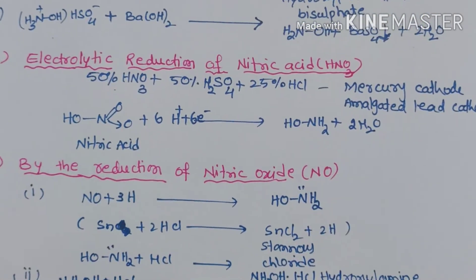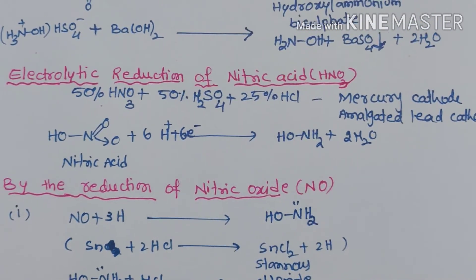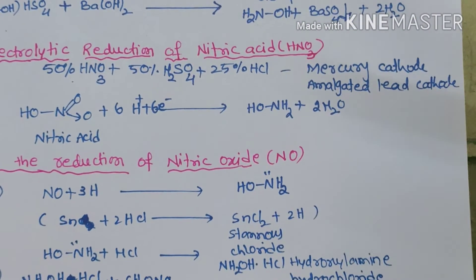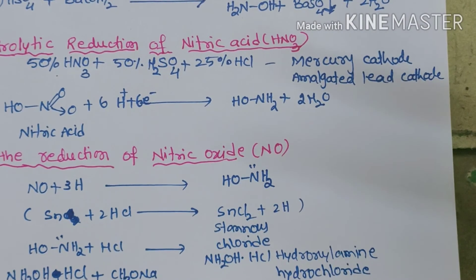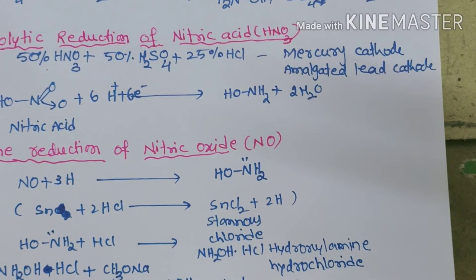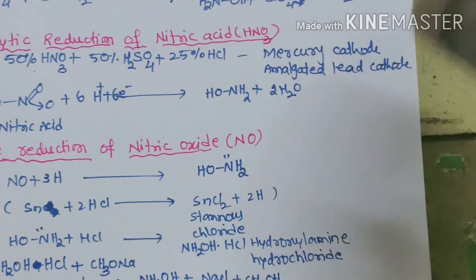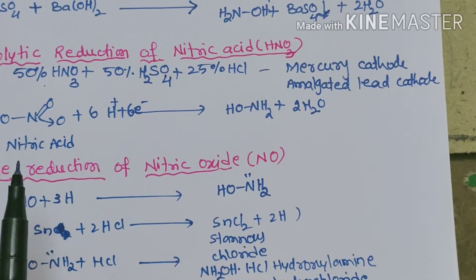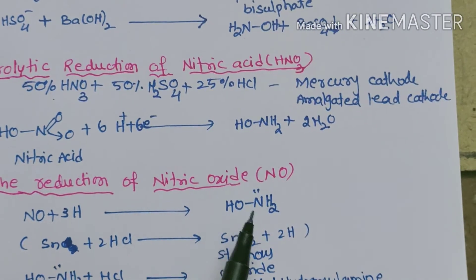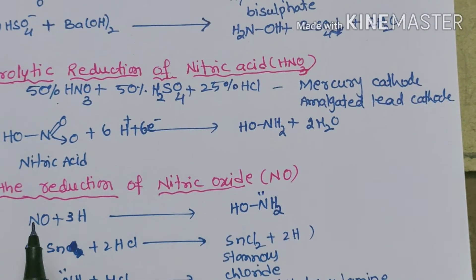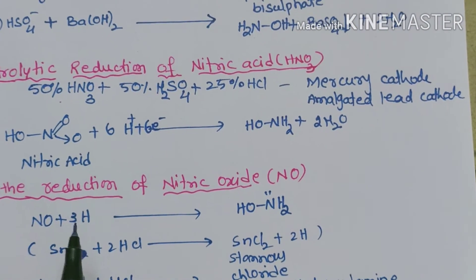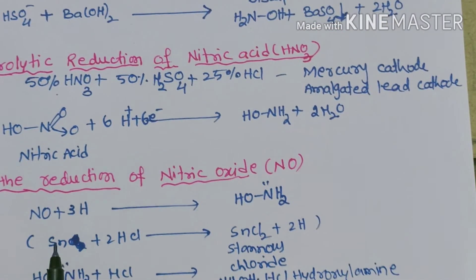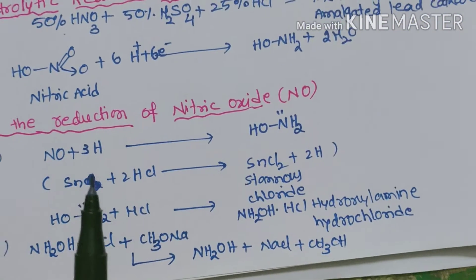The third preparation method is the reduction of nitric oxide (NO). Nitric oxide is reduced by using a mixture of tin and HCl. Nitric oxide gas is passed into a mixture of HCl solution and tin, and the nitric oxide undergoes reduction. In hydroxylamine we have three hydrogen atoms whereas in nitric oxide there are none, so three nascent hydrogen atoms are provided by the reaction between tin and HCl.